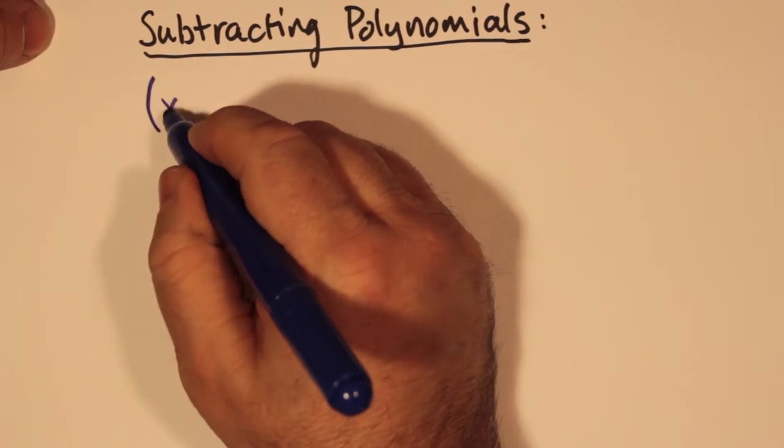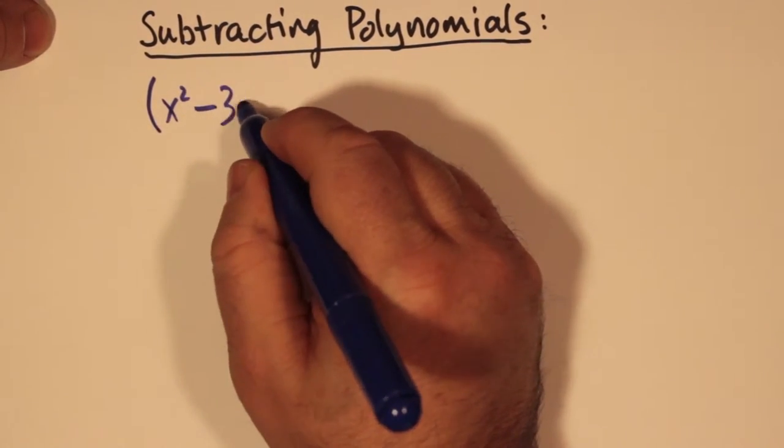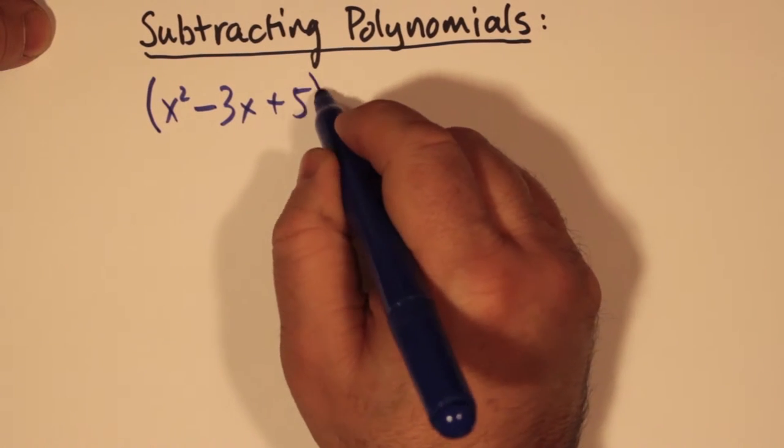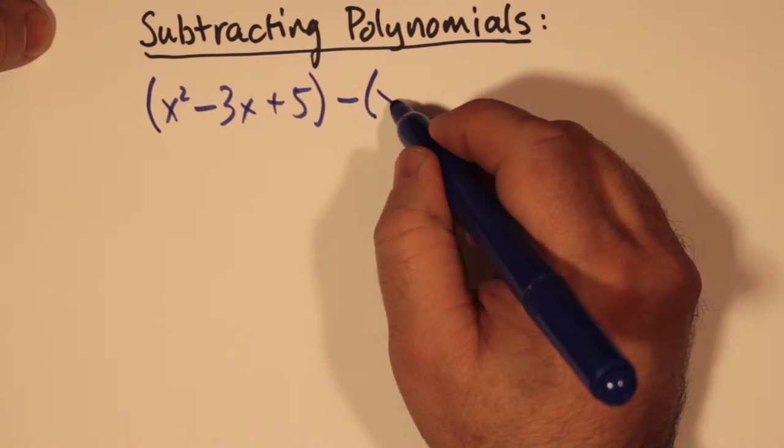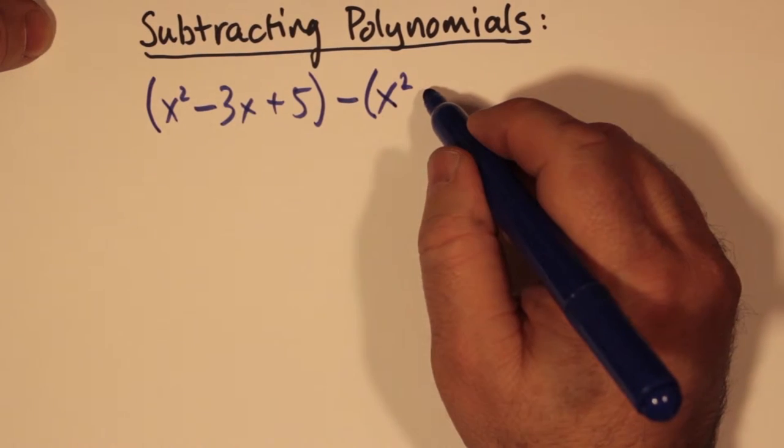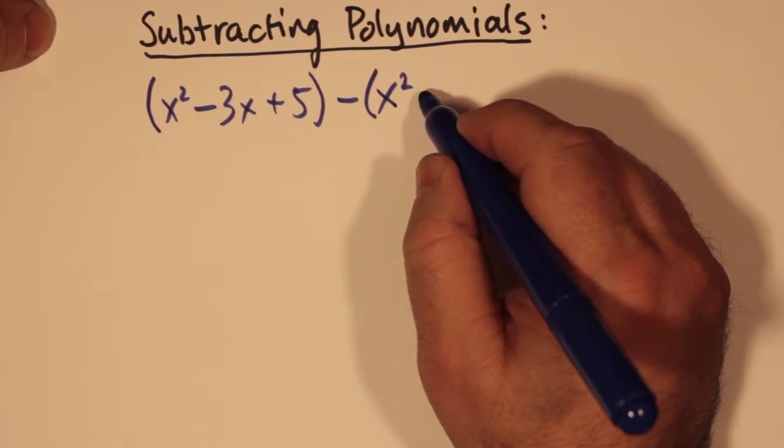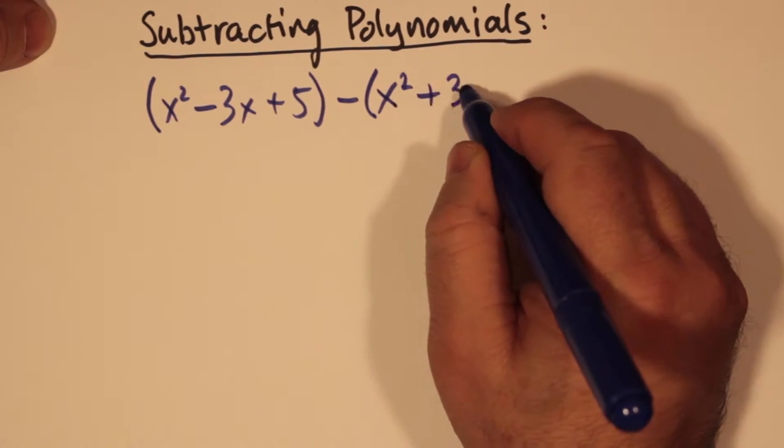Subtracting polynomials. Now we have here x squared plus 3x minus 5. We take away the polynomial x squared plus 3x minus 8. So we're taking away a polynomial from a polynomial.